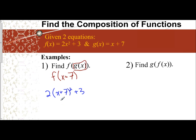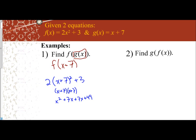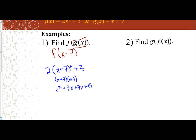Now we're going to have to square x + 7. Remember, (x + 7)² means (x + 7)(x + 7), which gives you x² + 7x + 7x + 49. Combining like terms, that's x² + 14x + 49. And that's just for squaring x + 7.